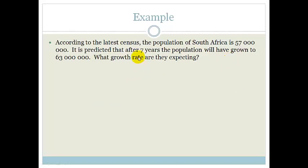Let's have another look at an example. According to the latest census, the population of South Africa is 57 million. 57 million is predicted after 7 years. So the population will have grown to 63 million. What growth rate are they expecting? What growth rate? So they're asking us for our I.